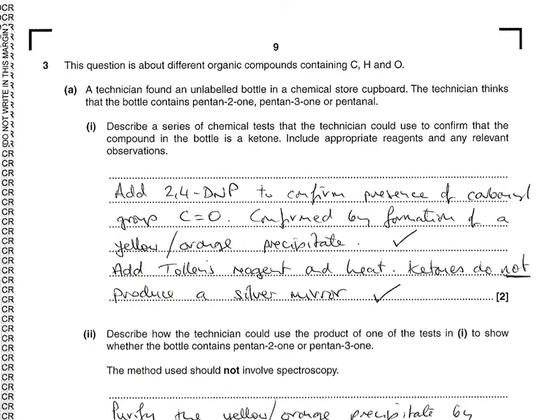The first part of the question presents a scenario where there's an unlabeled bottle of a chemical and the technician thinks it could be pentan-2-one, pentan-3-one, or pentanal, and we've got to come up with a series of chemical tests to confirm that the bottle is in fact a ketone.